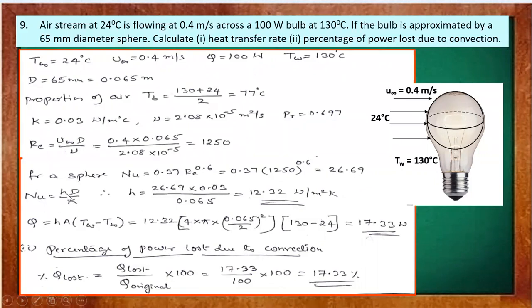The Nusselt number equals h × D / k, where the characteristic dimension is the diameter (unlike a flat plate where we use length). So h = Nu × k / D = 26.69 × k / D, giving h = 12.32 W/m²K. Then we find the rate of heat transfer.